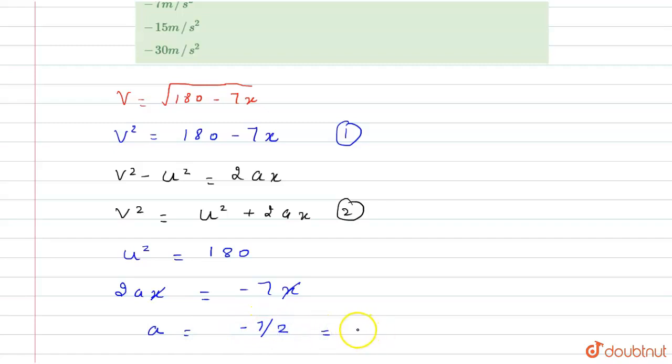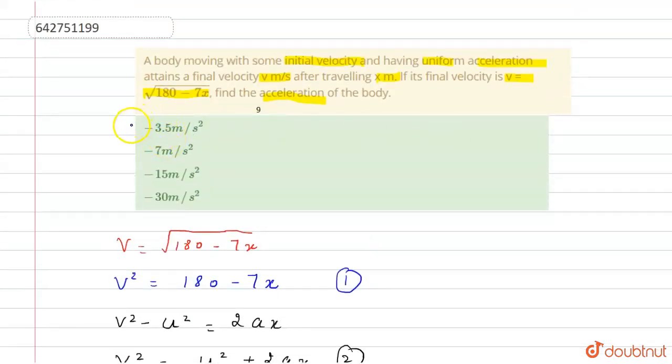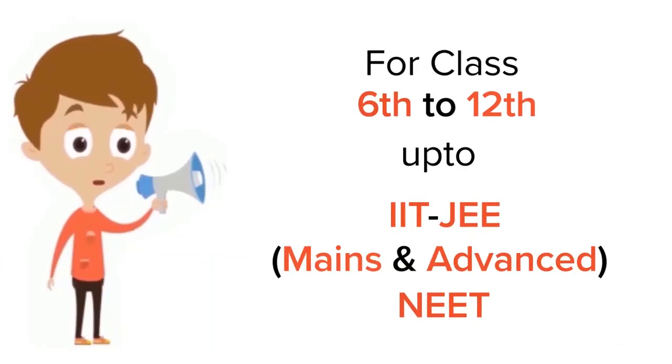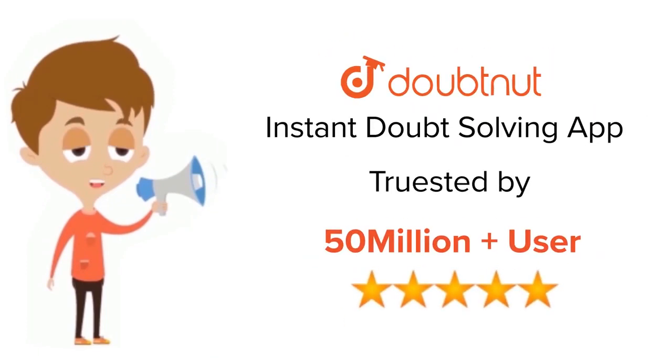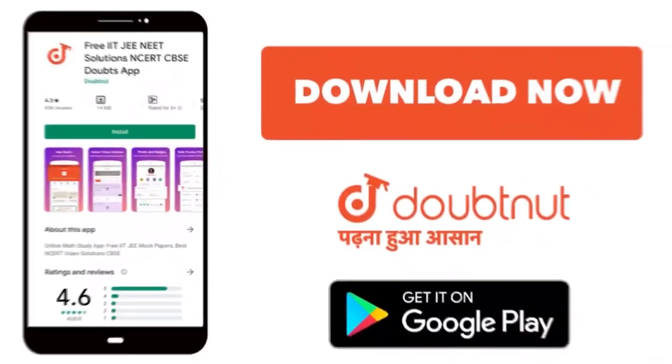Which equals minus 3.5 meter per second squared. This is the acceleration. Now check the options, so the first option is correct. I hope you understand the explanation. Thank you. For class 6 to 12, IIT, and NEET level, trusted by more than 5 crore students, download Doubtnut app today.